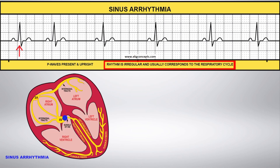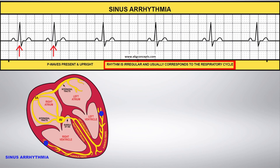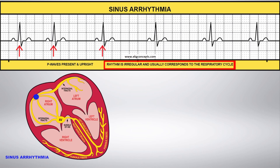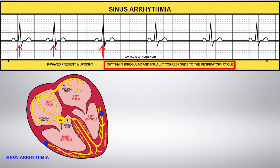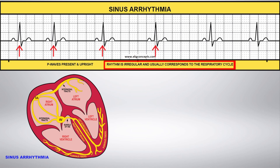With sinus arrhythmia, the impulse originates in the SA node and follows the normal electrical pathway, but the heart rate is irregular. Sinus arrhythmia usually corresponds to the respiratory cycle of the patient.